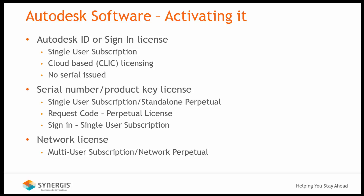The first method is called the Autodesk ID or sign-in method. This type of license is associated to a single user subscription, or was originally called cloud-based or click licensing. This type of activation requires no serial number — basically no serial number was issued or assigned to your given product. For the activation to work, the use of the product must be assigned to the end user's Autodesk account.